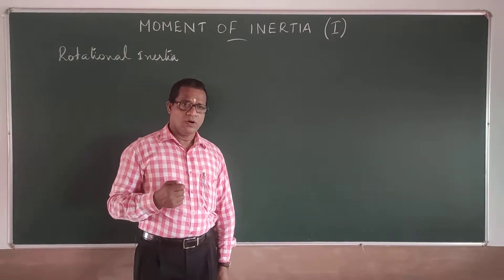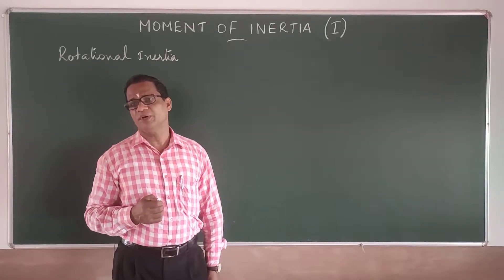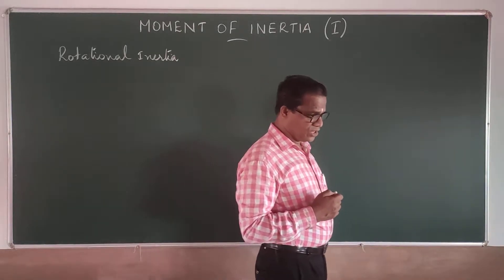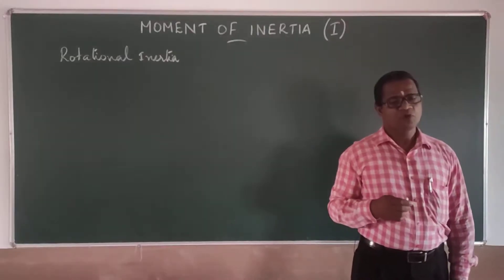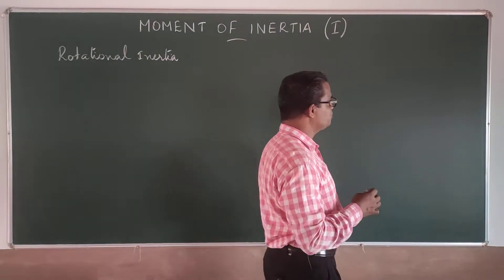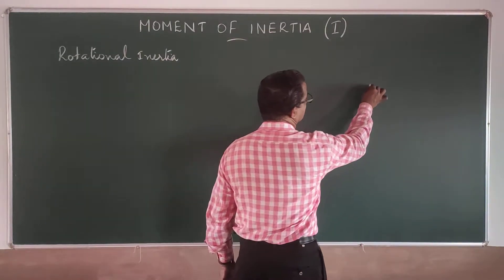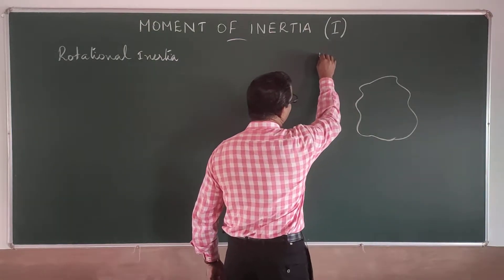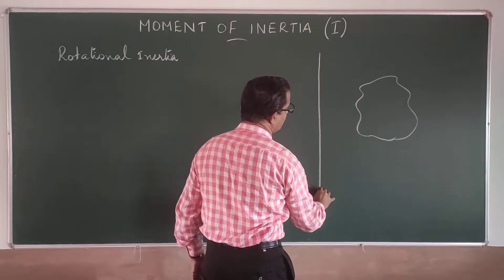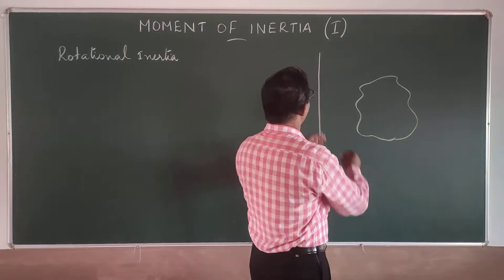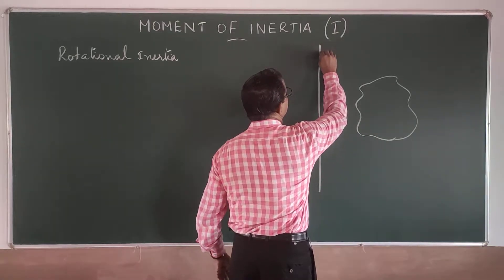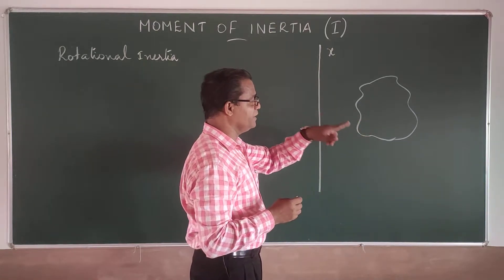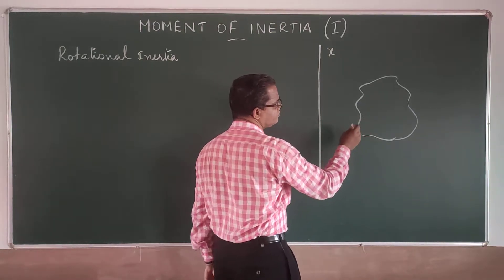Now, what is actually moment of inertia and how can we express it for a rotating body? For that, we consider a rigid body rotating about an axis x. So x is the axis about which this body is rotating.